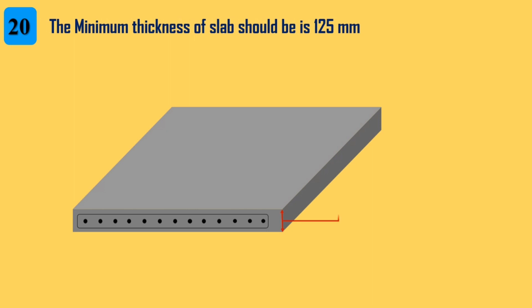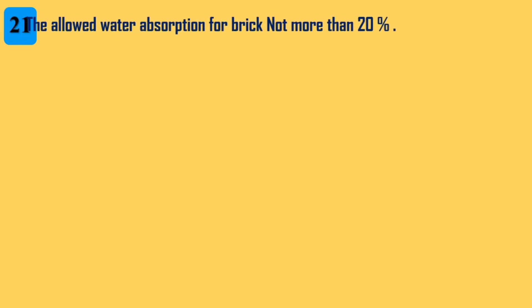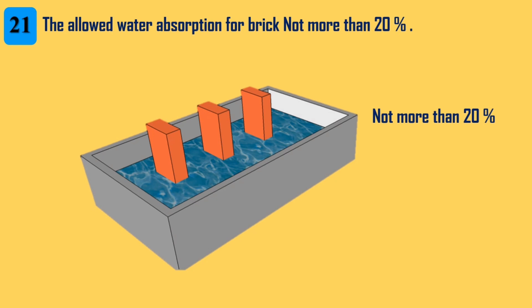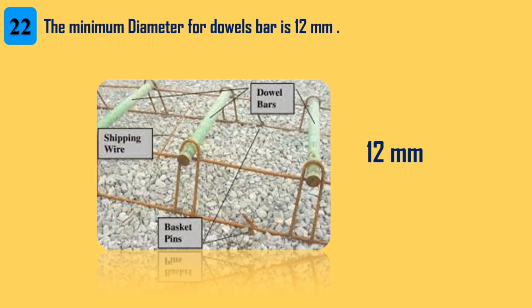20. The minimum thickness of a slab should be 125 mm. 21. The allowed water absorption for brick is not more than 20%. 22. The minimum diameter for dowel bars is 12 mm.